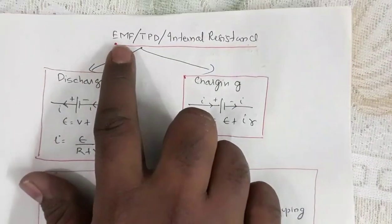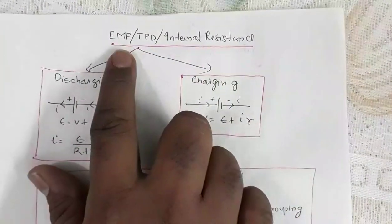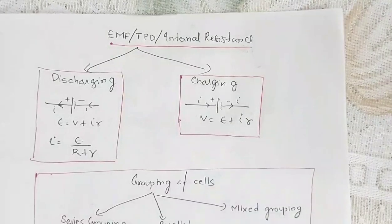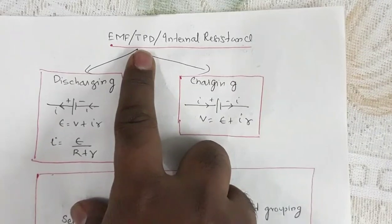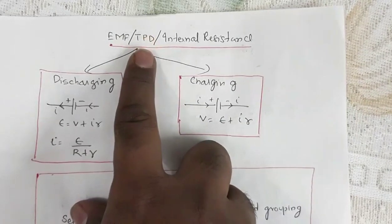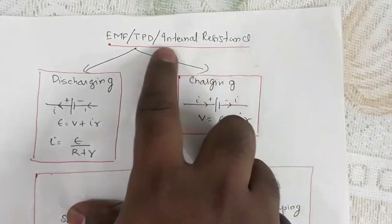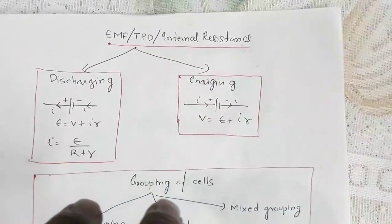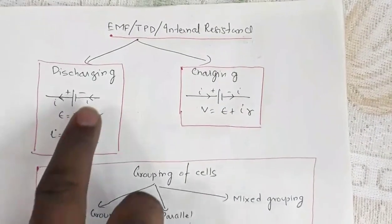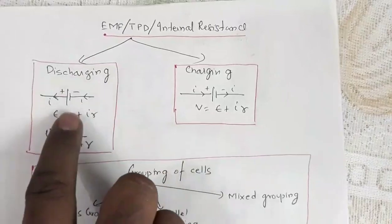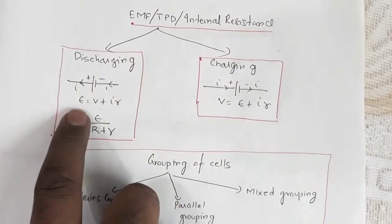Next is electromotive force, terminal potential difference, and internal resistance. EMF is the potential difference between the two terminals of a cell in an open circuit. Terminal potential difference is the potential difference across the two terminals in a closed circuit when current is being drawn. Internal resistance is the resistance offered by the electrolyte and electrodes of the cell. Under discharging: E = V + Ir, so EMF is greater than terminal potential difference. Net current I = E / (R + r).